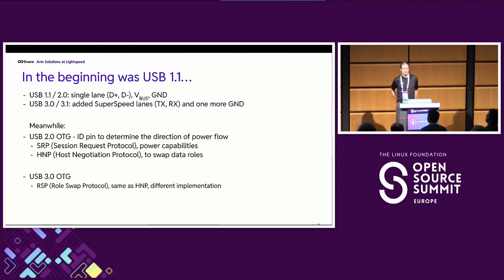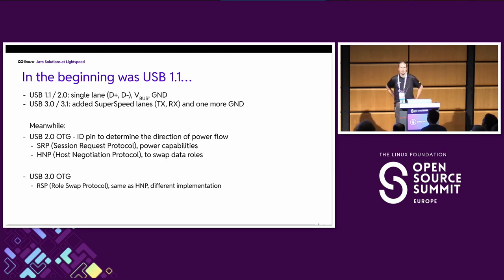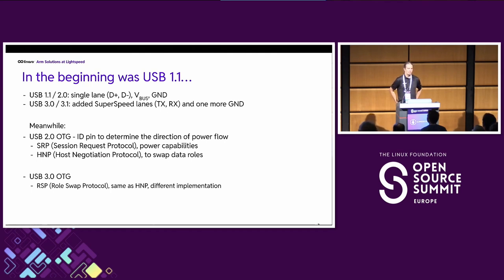A bit of history. In the beginning was USB 1.1 — there was USB 1.0 but nobody ever touched that, so the first real USB bus was USB 1.1. It was very simple, just four pins: VBus voltage, ground, and one single differential pair of wires — one single lane, D-plus and D-minus. USB 3.1 arrived later, and at that point 48 Mbps was not enough, so we got two more differential pairs — one to transmit and one to receive — giving us several gigabits per second. That was already nine pins.